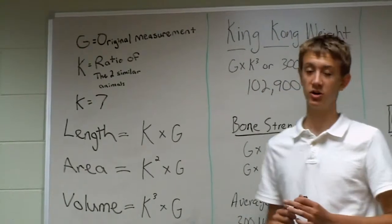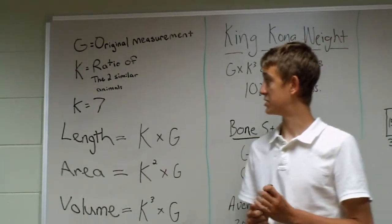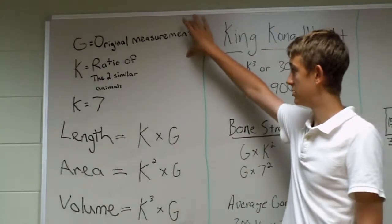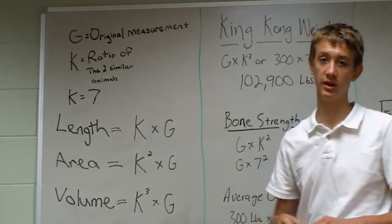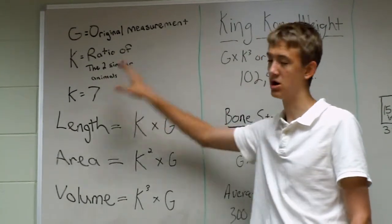The fundamental theorem of similarity has two parts in it. Having G be the original measurement, as in area, length, volume, and K the ratio of the two objects.